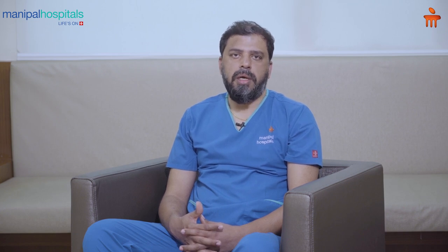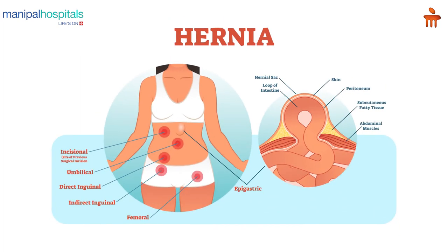Commonly we see hernias in the abdominal wall. There are different types of hernias. It can be an umbilical hernia around the umbilicus, groin hernias also called inguinal and femoral hernias, or hernias at a previous surgery site which we call incisional hernias.